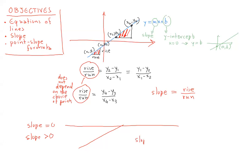If the slope is negative, then the line is going down as you look at it from left to right.